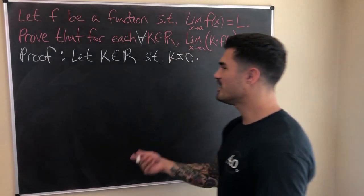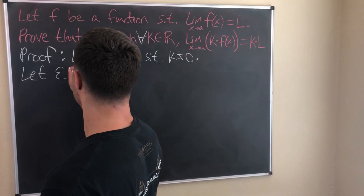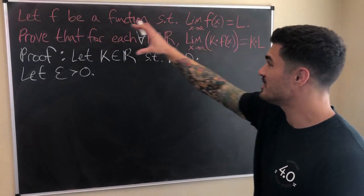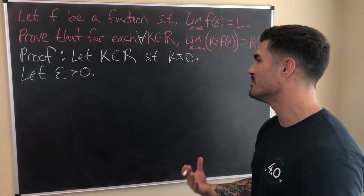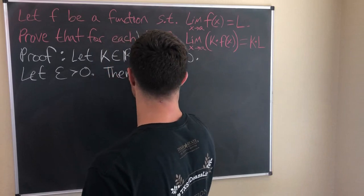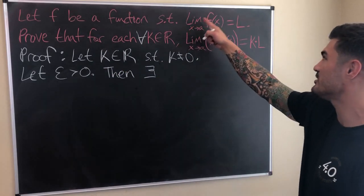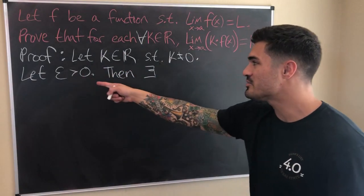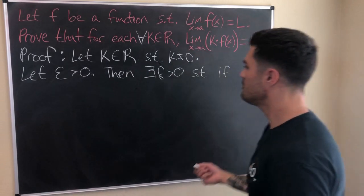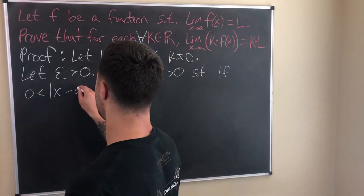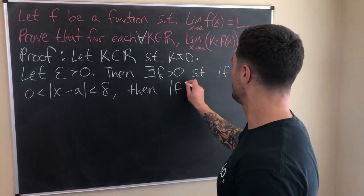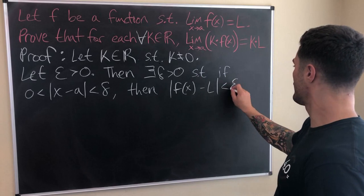Let ε > 0. Now we're pulling the definition out of our pocket. A really good tip for proving anything is to look at the vocabulary words and definitions you've been given, write them out, and see how you can manipulate them — that's half of a delta-epsilon proof. Since we know the limit of f(x) as x approaches a equals L, that means given any ε > 0, there exists a δ > 0 such that if 0 < |x − a| < δ, then |f(x) − L| < ε.